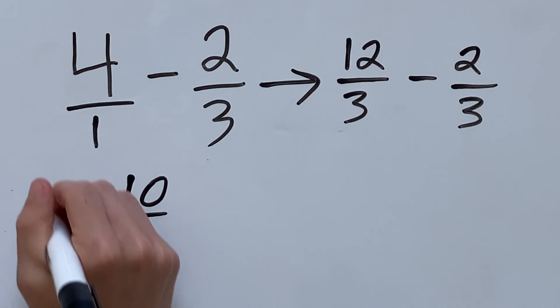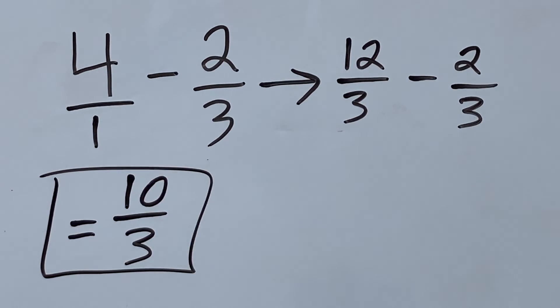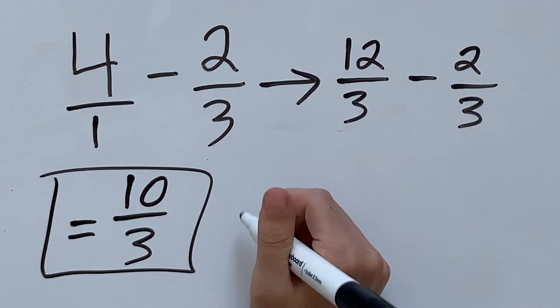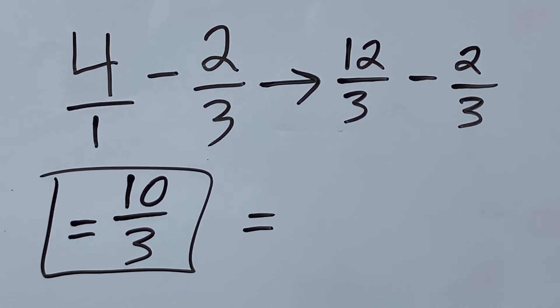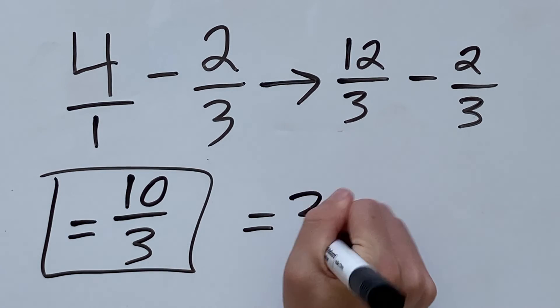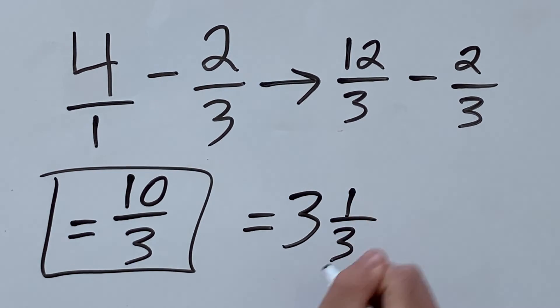And that is an okay answer, but if you want to go one step further, we can rewrite this as a mixed number. 10 over 3 as a mixed number is 3 and 1 third because 3 goes into 10 three times with a remainder of 1. And the denominator will stay as 3.